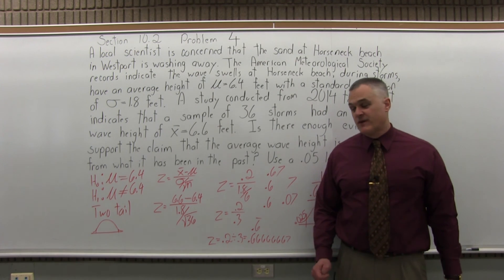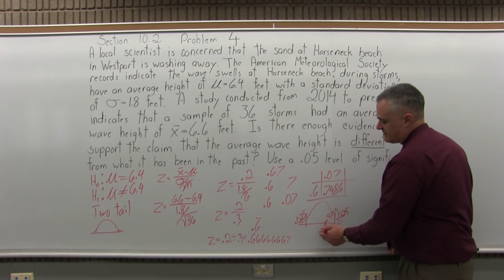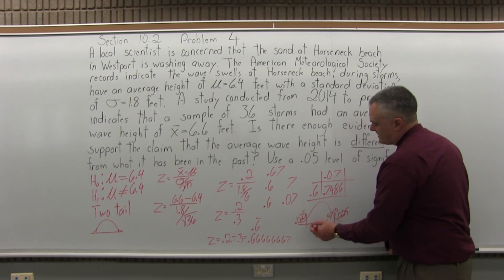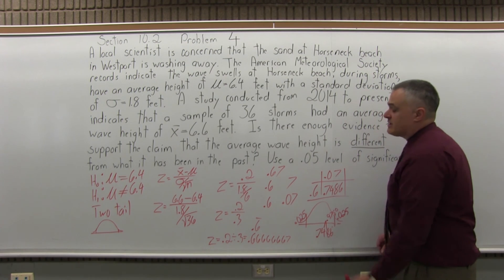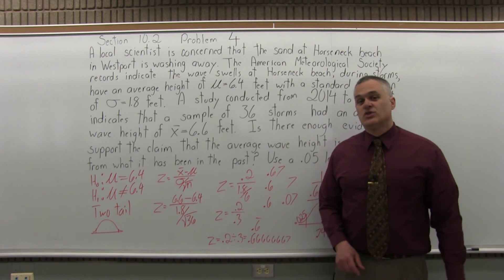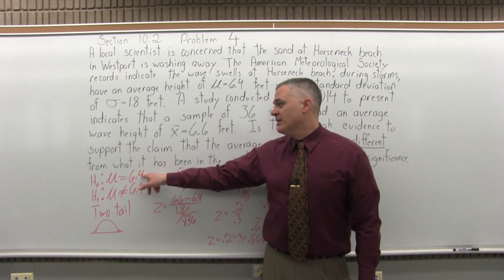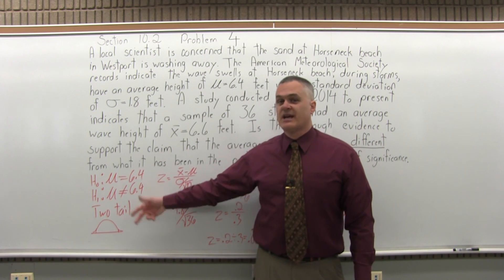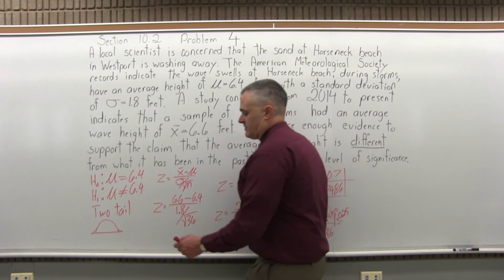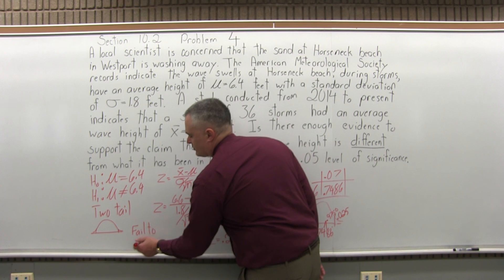So our chart value does not go into either critical end, 0.7486. This is like in proportion somewhere, a little to the right of the middle, but not far out into the critical region. So in this particular case, there's not enough evidence to reject the null. We will fail to reject the null, meaning the null hypothesis is more likely to be true, that the wave height still has an average of 6.4 feet during storms. So my conclusion, fail to reject null.